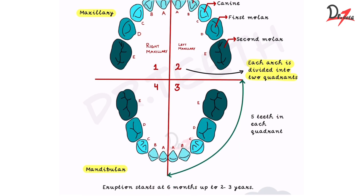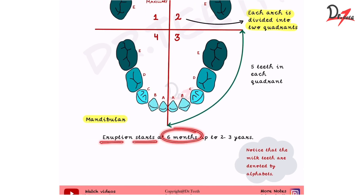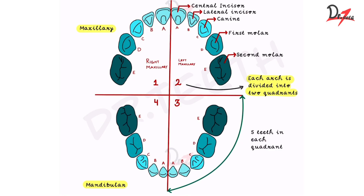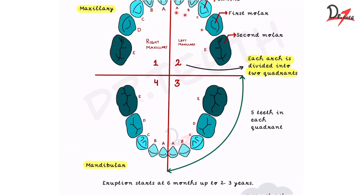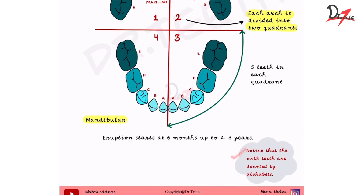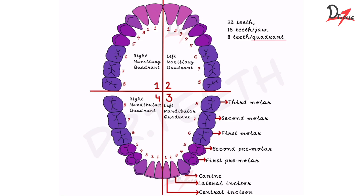So in the maxilla we have 10 teeth and in the mandible 10 again. The deciduous dentition eruption starts at six months, and the first tooth to erupt in the oral cavity is the lower central incisor. It lasts up to about two to three years of age. Milk teeth are denoted by alphabets (A, B, C, D, E), whereas permanent teeth are denoted by numbers.